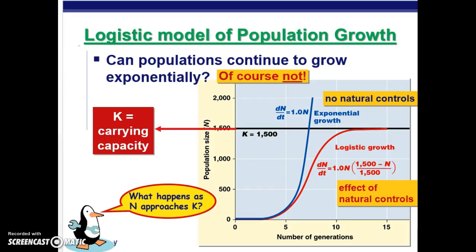Normally we don't have unlimited population growth, so we don't normally get exponential growth. Instead we get logistic growth rate, because populations cannot continue to grow exponentially or they'll outgrow their environment and available resources. The blue line shows exponential growth, but normally what we see is an S-shaped curve, which is logistic growth. You can still have rapid growth initially, but at some point it levels off.